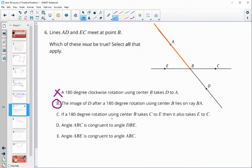If a 180 degree rotation using B takes C onto E. So they're telling us when we rotate at 180 degrees, C is going to land right on E. Does that mean that E would land on C? And that is true because they must be the same distance from B. So if C lands on E, then E will also land on C.